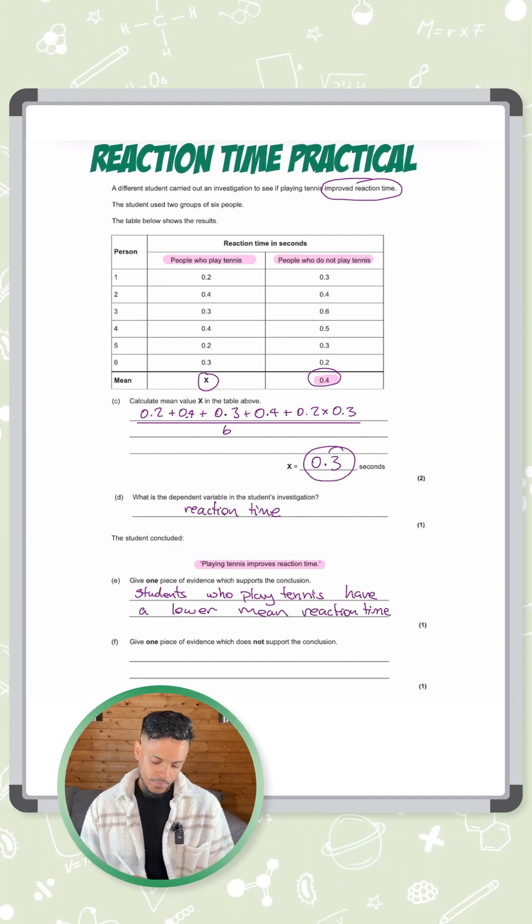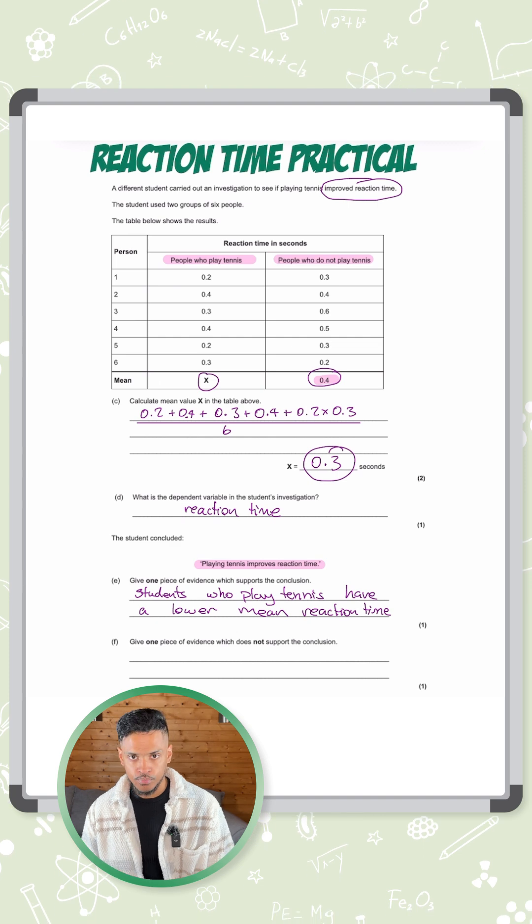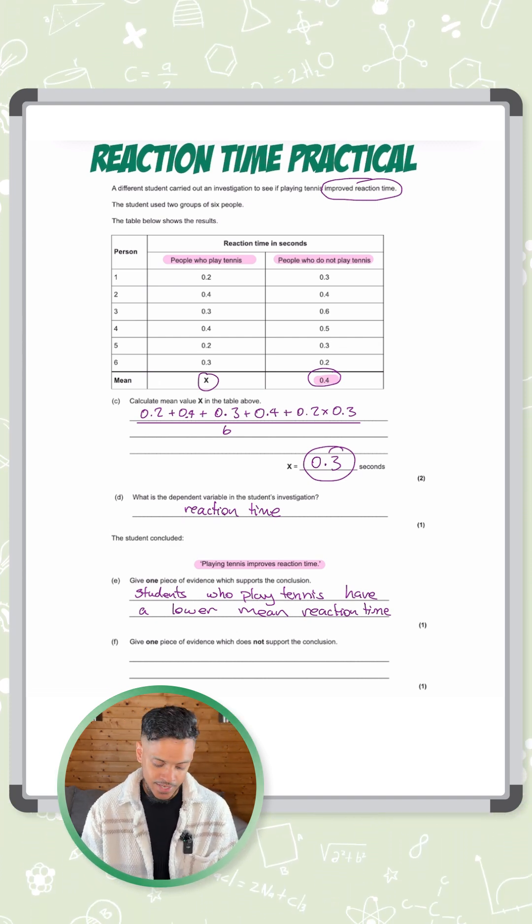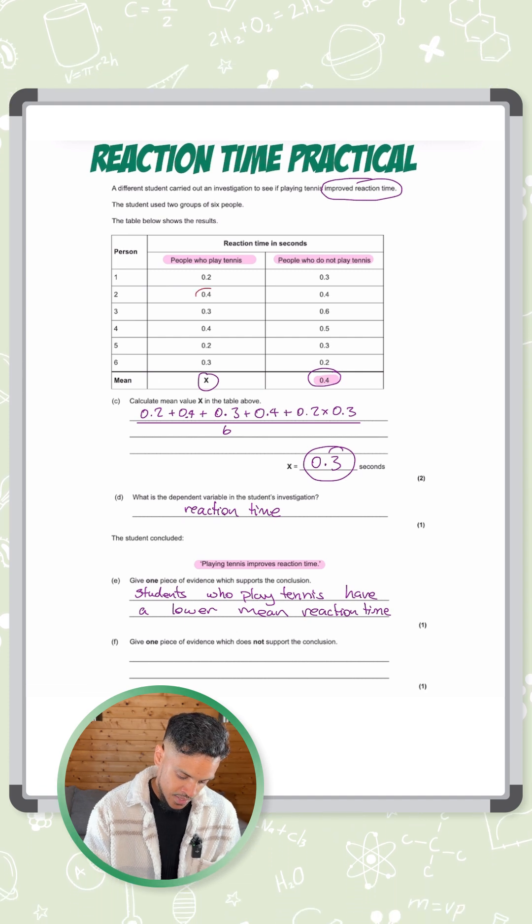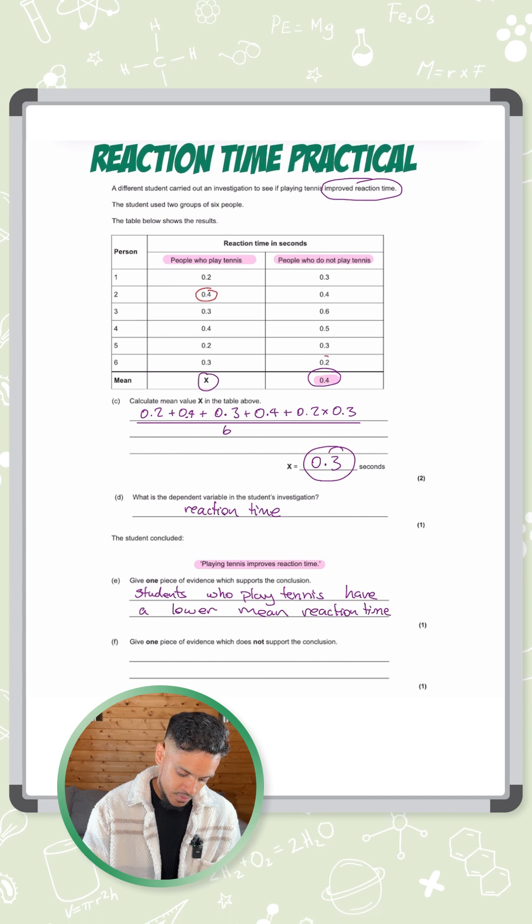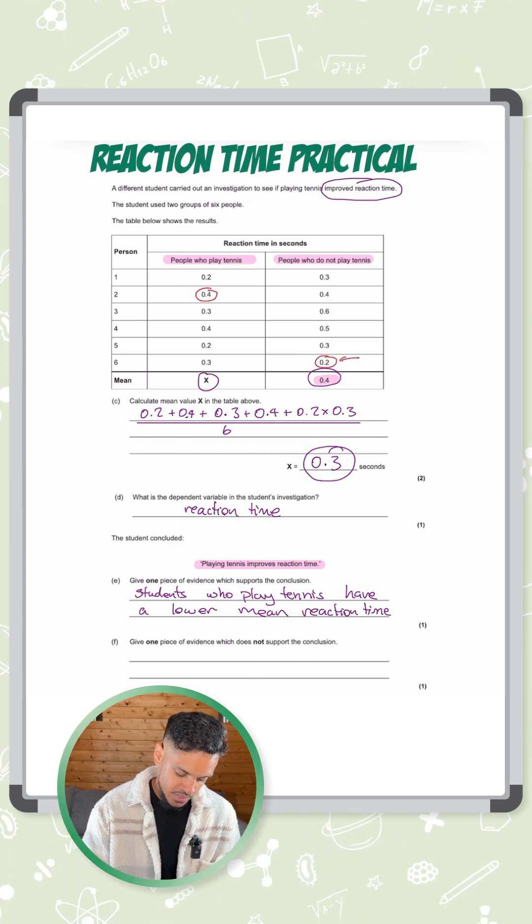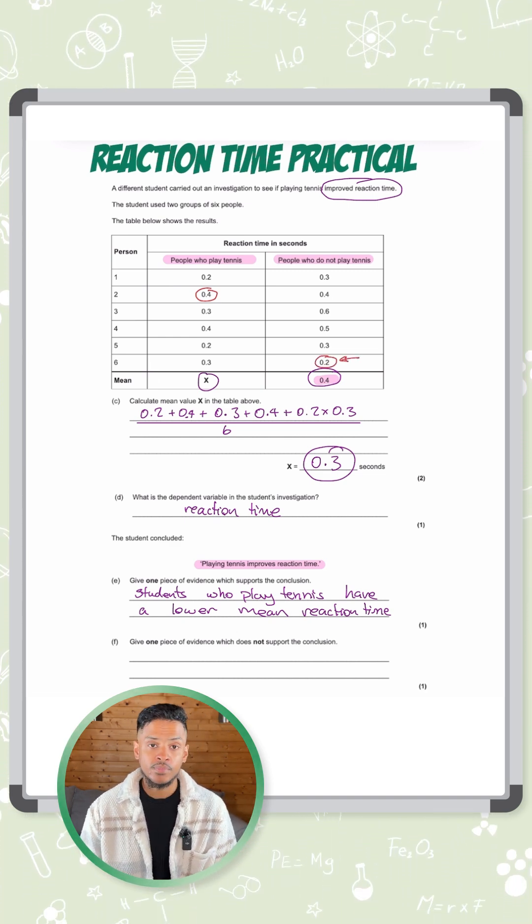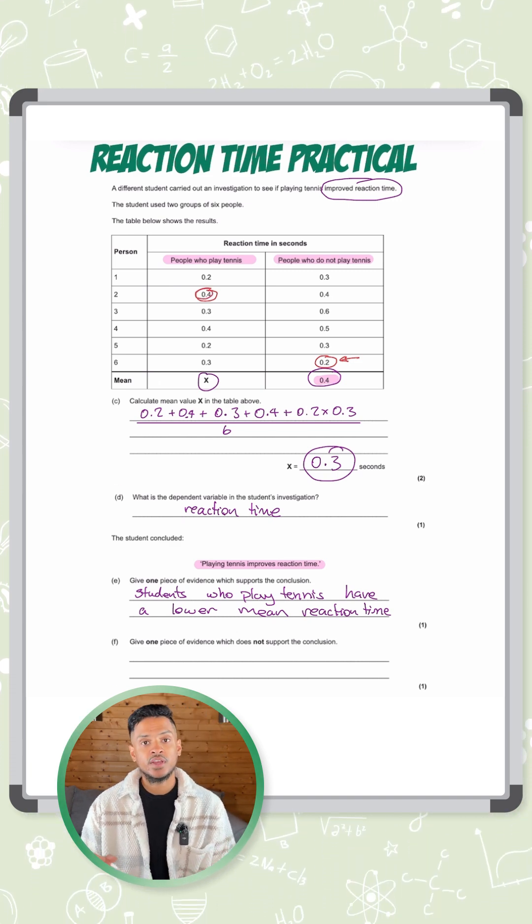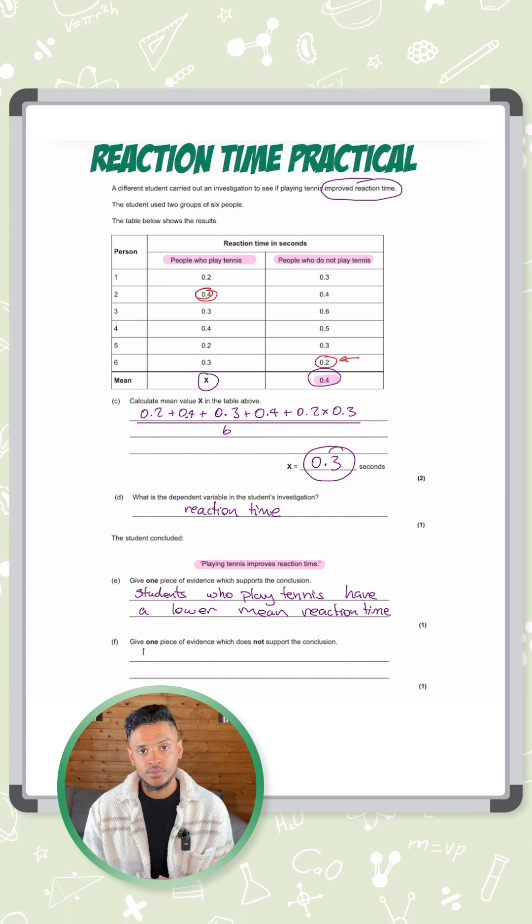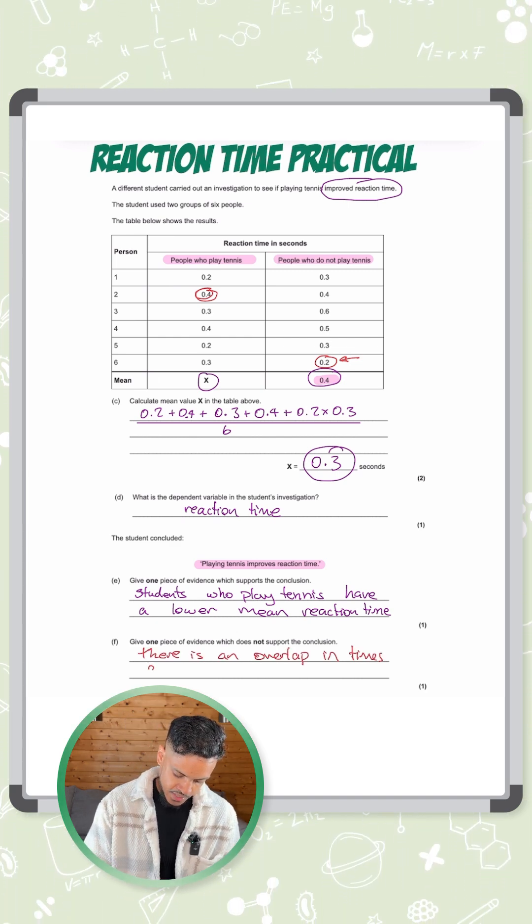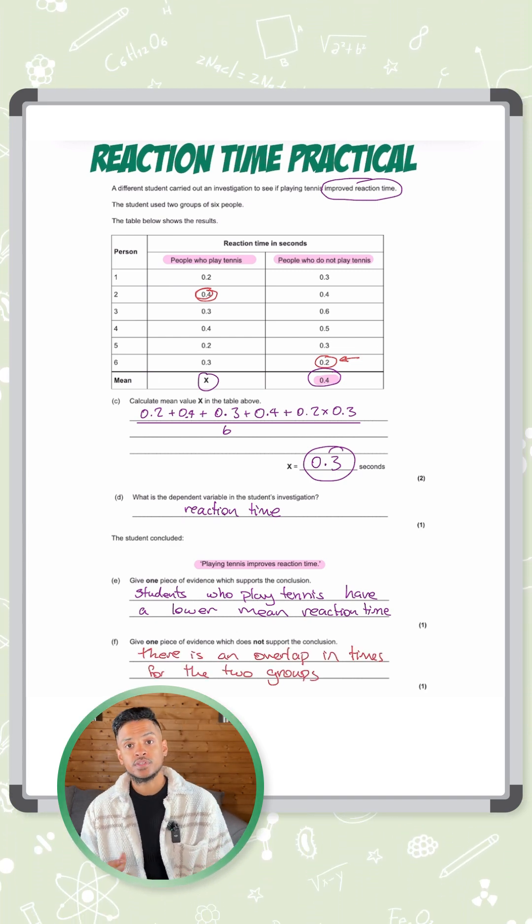The next part says give one piece of evidence which does not support the conclusion. Let's look at these numbers carefully. In the people who play tennis, you can clearly see that some people have slower reactions than people who don't play tennis. We've got one person here which has reaction time of 0.2 and they don't play tennis. And we've got a person here who does play tennis but has a reaction time of 0.4. So there's basically an overlap of results here. So we can say there is an overlap in times for the two groups. That's how you get the marks.